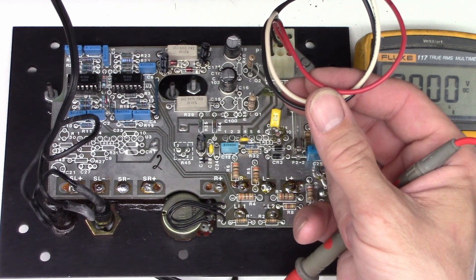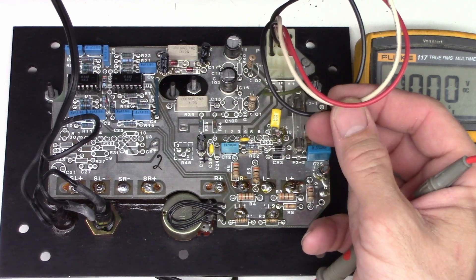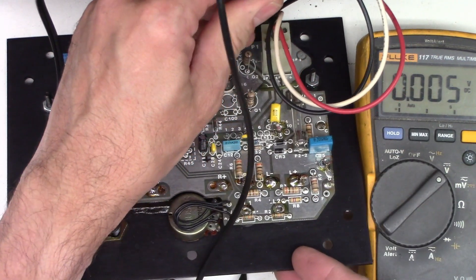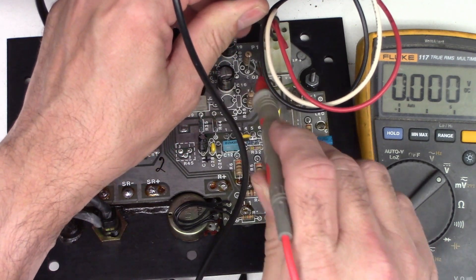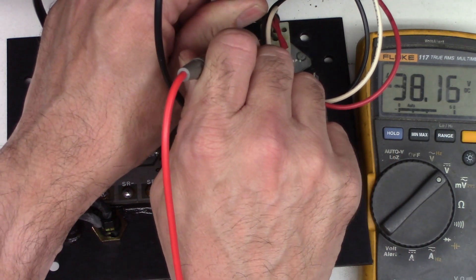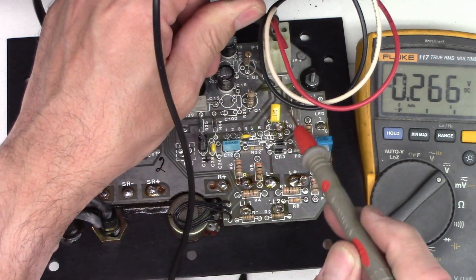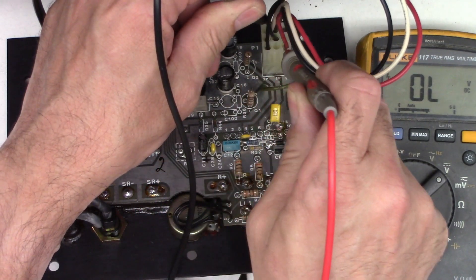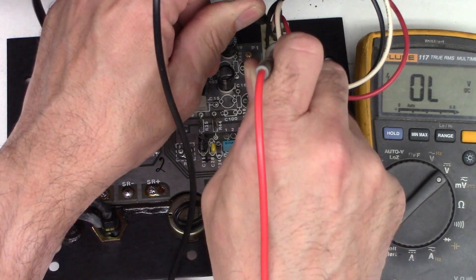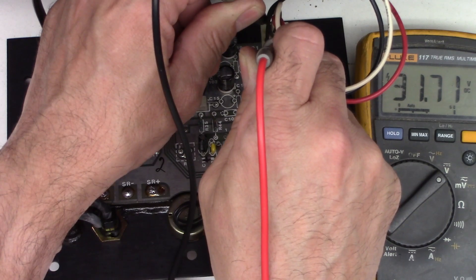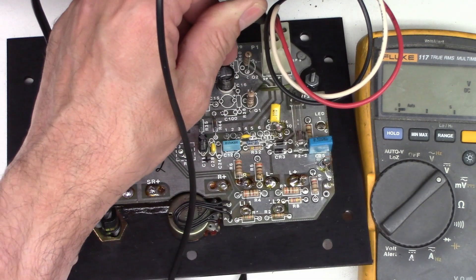Let's check DC voltage first. These three leads right here are the power supply leads. The red is the positive, the black is common, and the white is the negative. If I put my negative probe in the black lead down here, and we check from the white to the black, I have minus 38 volts. If I check from the red to the black, I only have 31 volts. That is odd. They should be pretty much balanced.